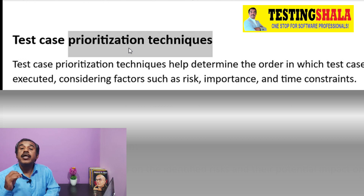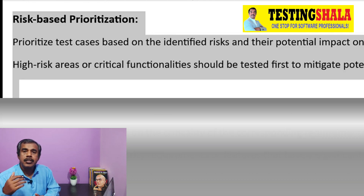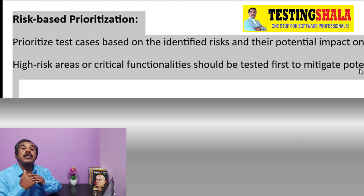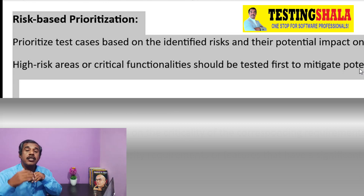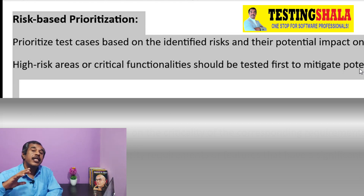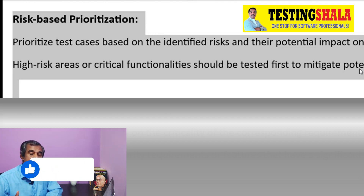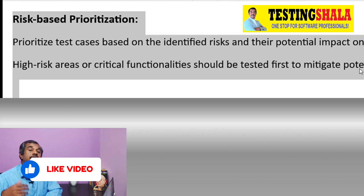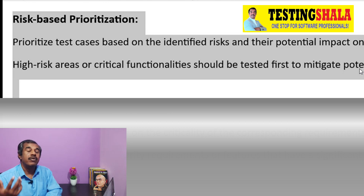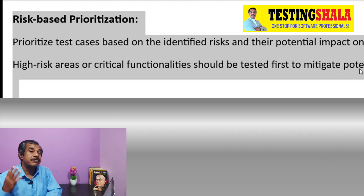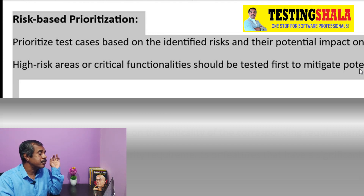The first prioritization technique is risk-based prioritization. In risk-based testing, we prioritize test cases based on the risk. Every test case is associated with a risk and its mitigation plan. If there is a highest risk, we prioritize those test cases for execution. If the impact is very less and nothing is affecting our customer, business, or application, we may not prioritize those test cases.